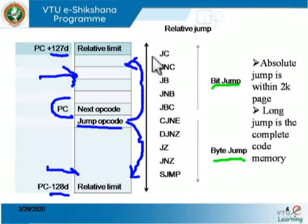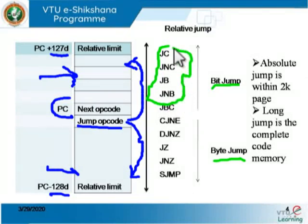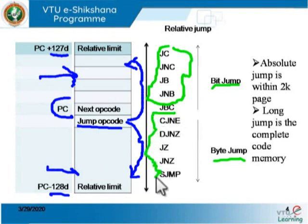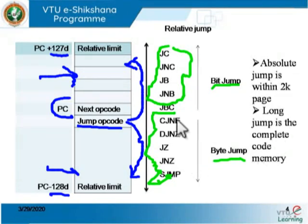For the bit jump category: jump on carry, jump on no carry, jump if the bit is set, jump if the bit is not set, and jump when the bit is set then clear it. The byte instructions check for the complete byte. These are all the instructions associated with the relative jump.